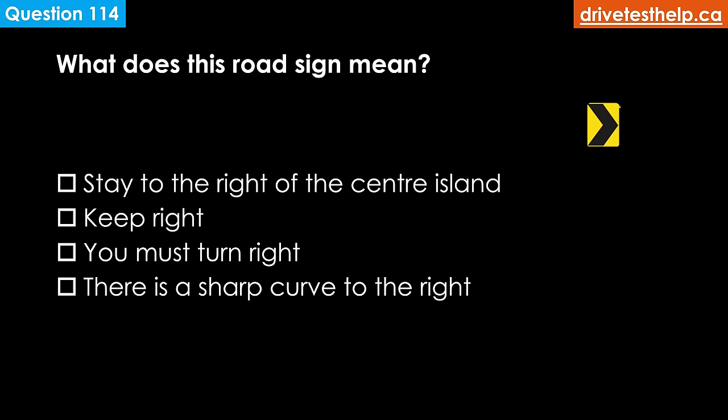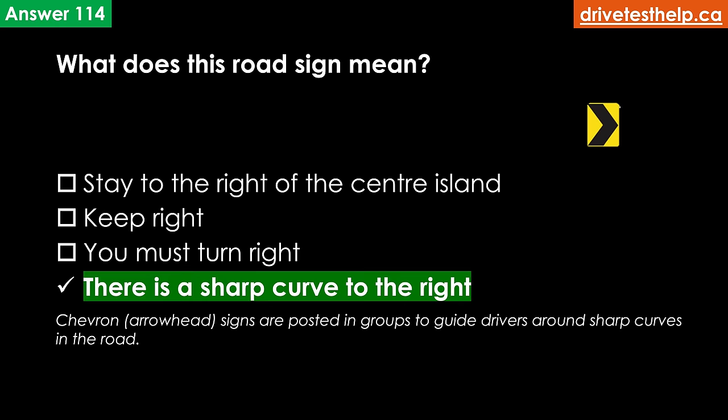What does this road sign mean? Options: stay to the right of the center island; keep right; you must turn right; there is a sharp curve to the right. The correct answer is there is a sharp curve to the right. Chevron or arrowhead signs are posted in groups to guide drivers around sharp curves in the road.